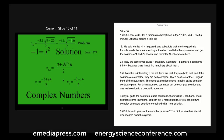They're sometimes called imaginary numbers, but that's a bad name because there's nothing imaginary about them. If the solutions are real, they're both real, and if the solutions are complex, they're both complex — that's because of the plus and minus sign in front of the square root. The complex solutions always come out in pairs called complex conjugate pairs. For this reason, you never get one complex solution and one real solution to a quadratic equation.